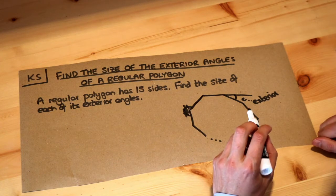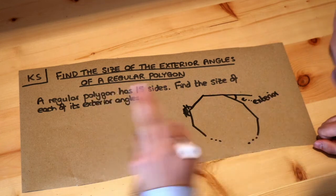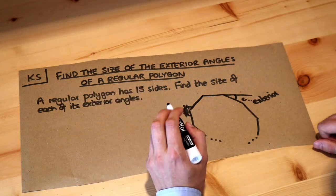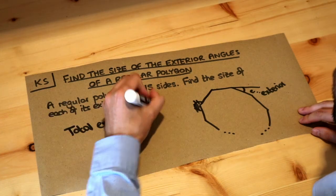Now in another video we saw that the total exterior angle of a polygon, any polygon whether regular or not, is 360 degrees. So the total exterior angle is equal to 360 degrees.